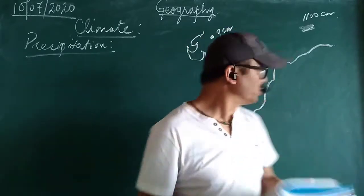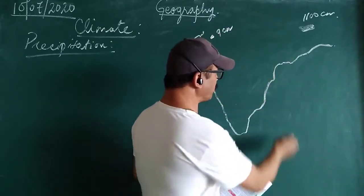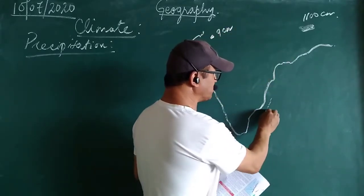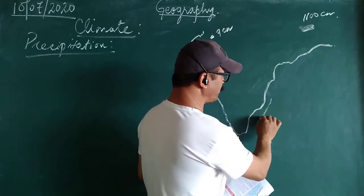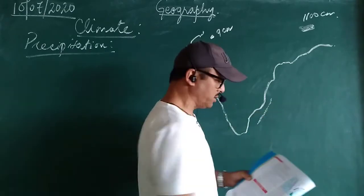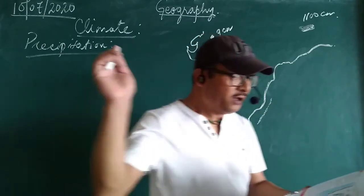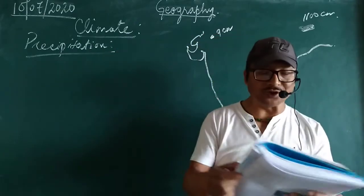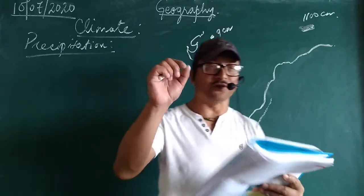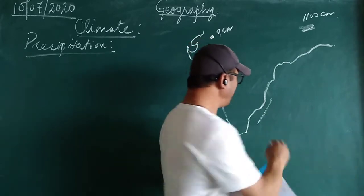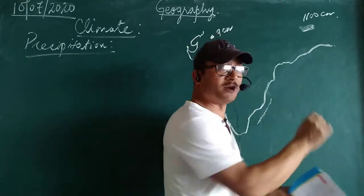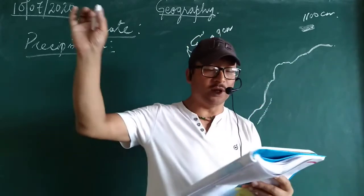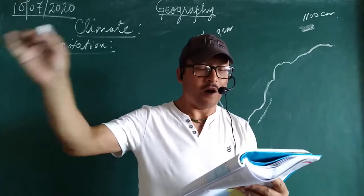Now, the Coromandel Coast. This Coromandel Coast remains dry in the months of July and August.